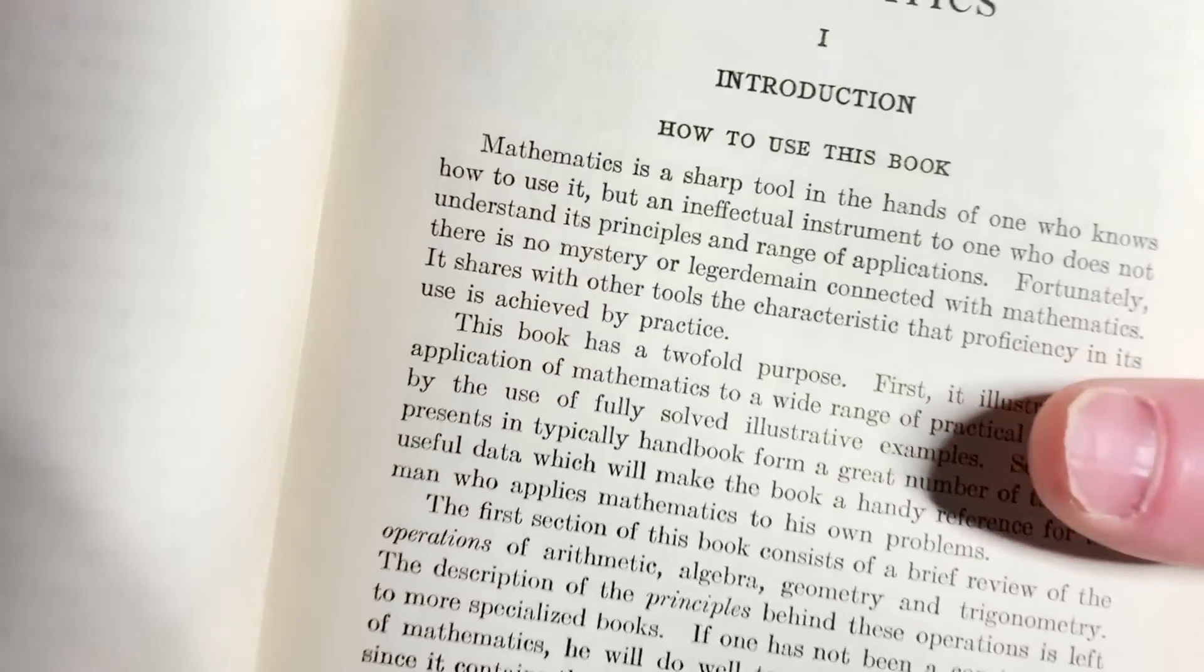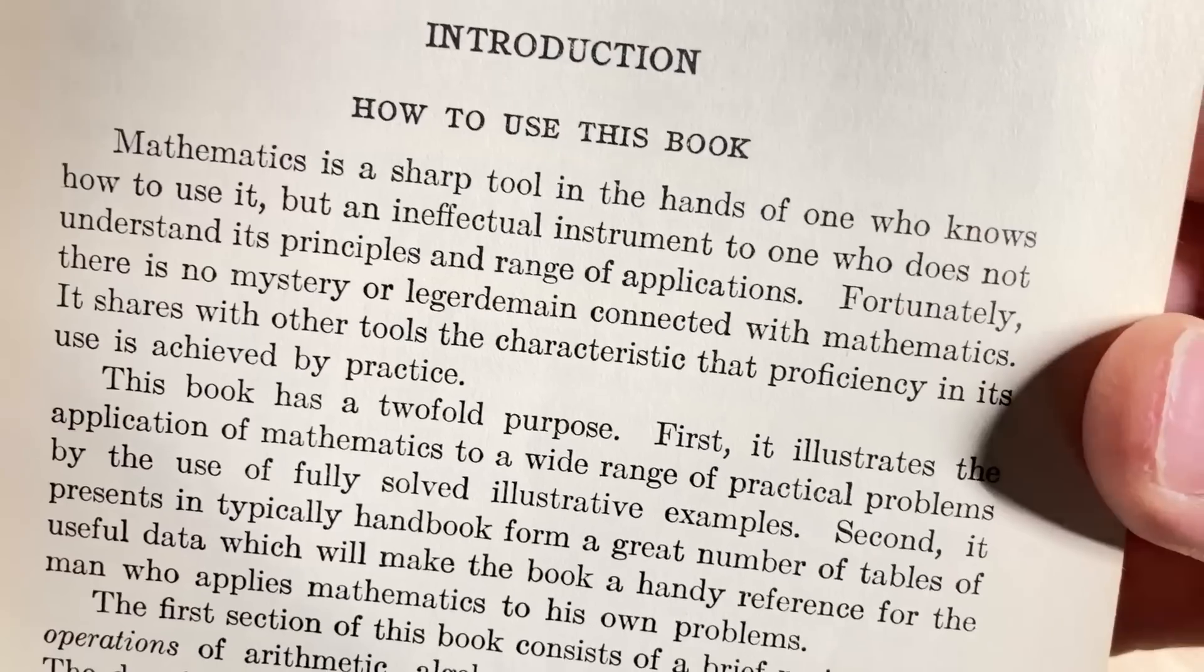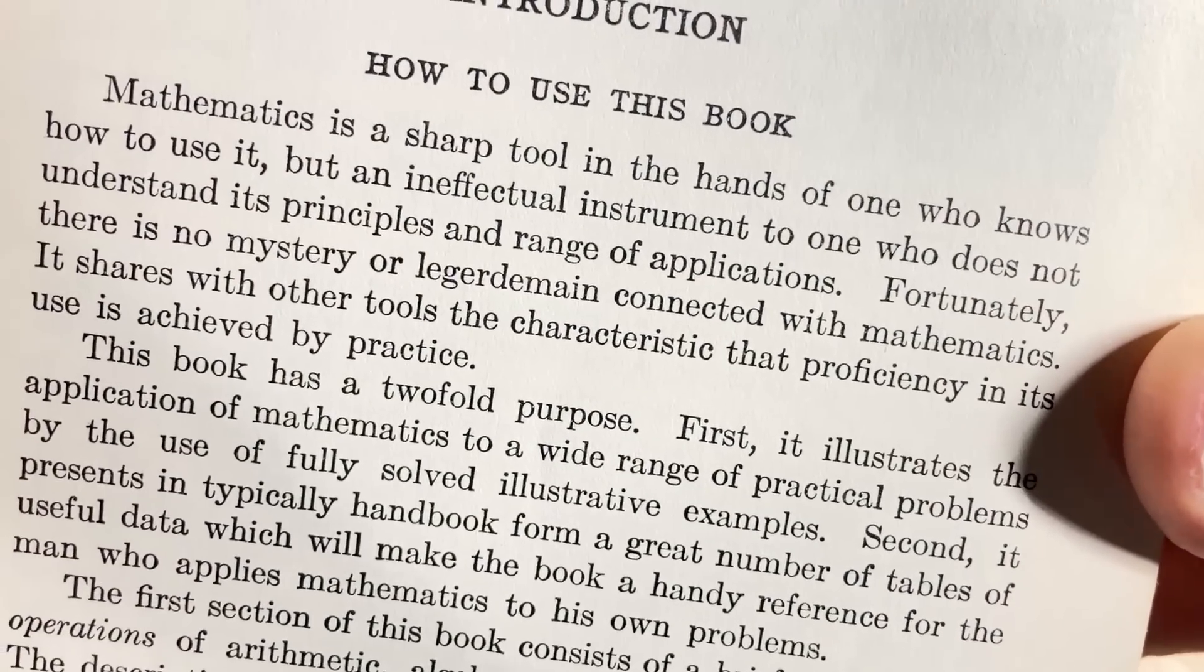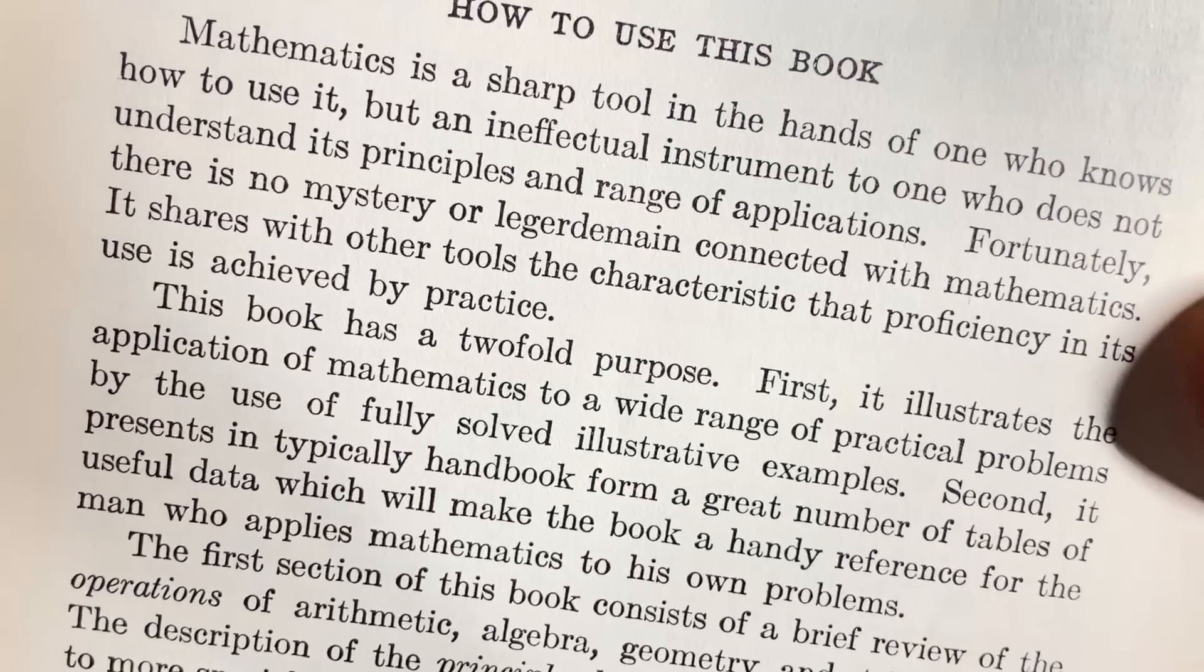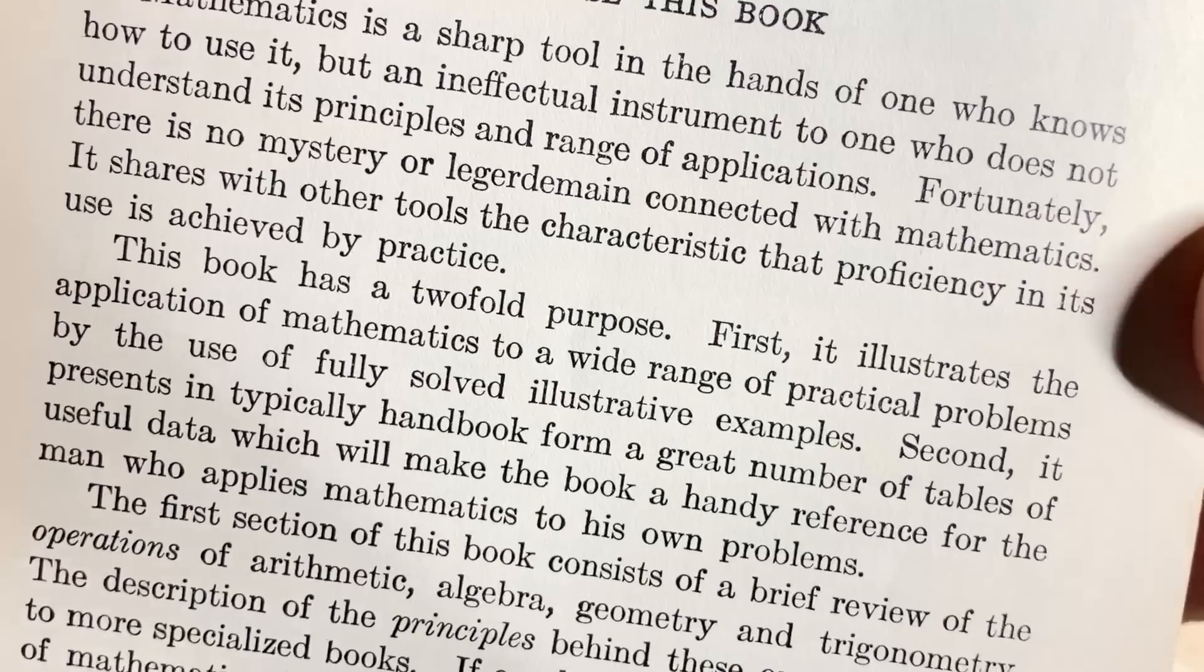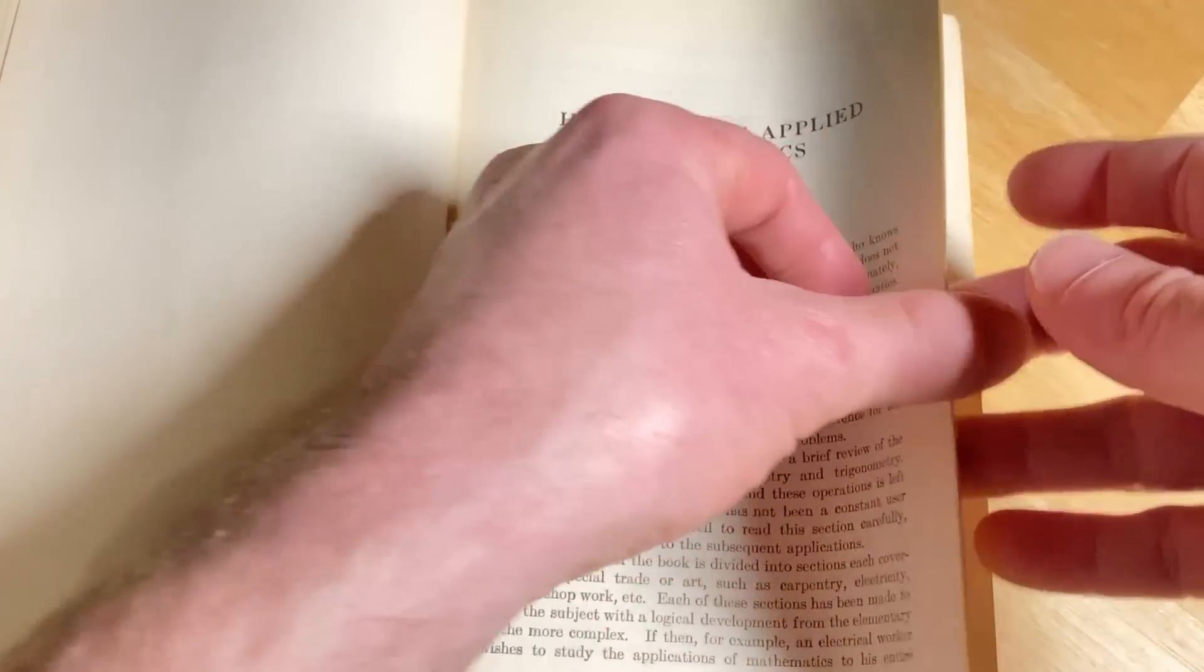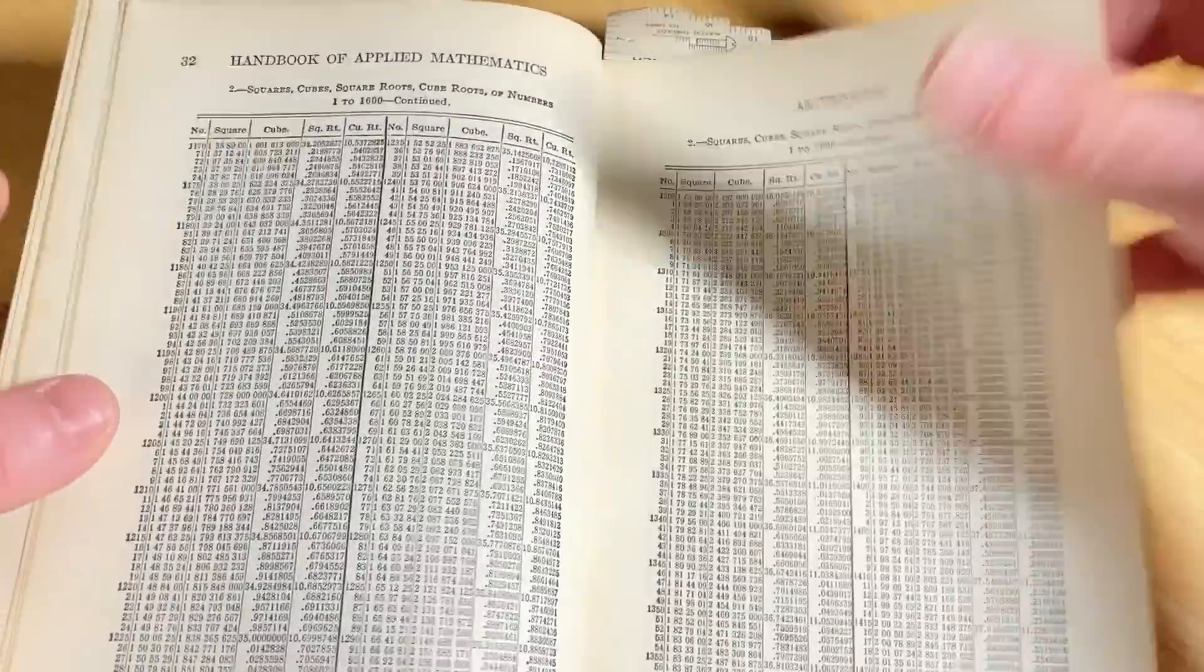Handbook of Applied Mathematics. How to use this book. Mathematics is a sharp tool in the hands of one who knows how to use it. Indeed, it is. But an ineffectual instrument to one who does not understand its principles and a range of applications. Fortunately, there is no mystery or ledger domain connected with mathematics. Big words in old books. It shares with other tools the characteristic that proficiency in its use is achieved by practice. Let's just kind of glance at the book and see some of the math it actually contains. So, this is basic formulas here. Basic arithmetic. Nothing fancy.